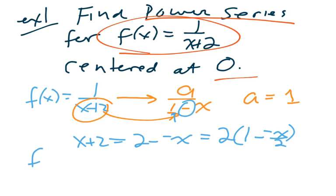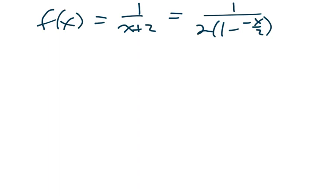And we need to have the 1 there, so we're going to factor out a 2. So this equals 2 times 1 minus negative x over 2. So we can rewrite our f of x as 1 over 2 times 1 minus negative x over 2. That's looking more like our formulation for an infinite geometric series.